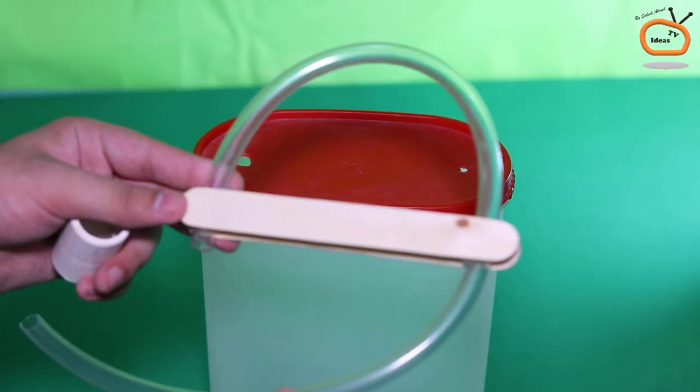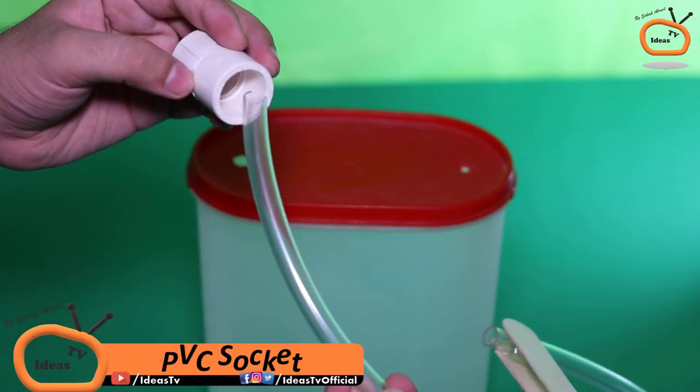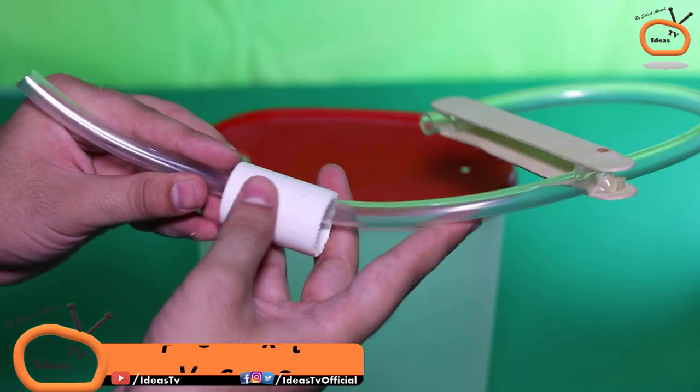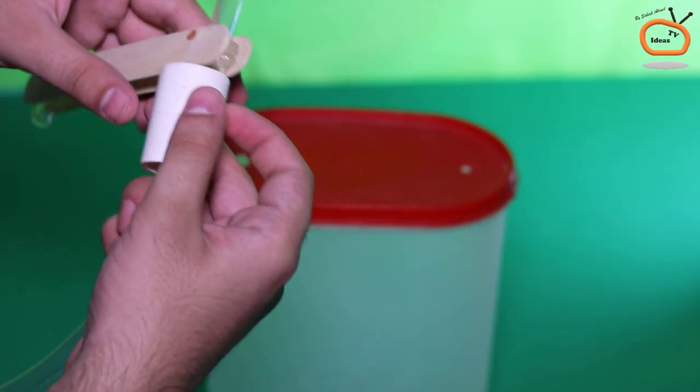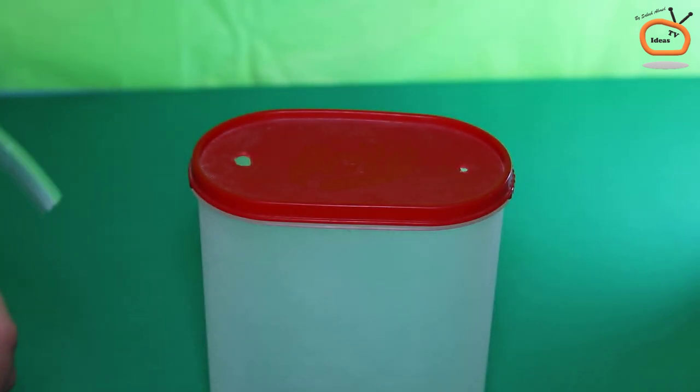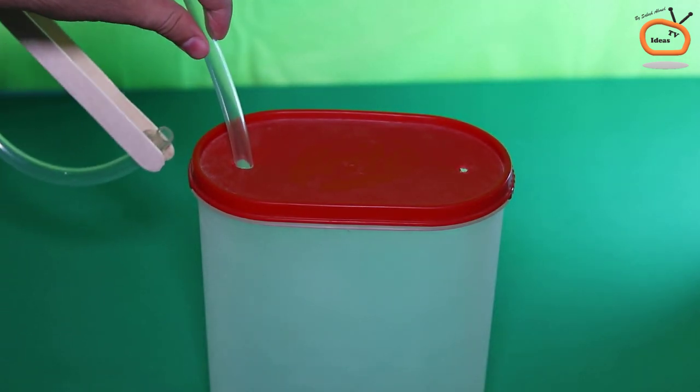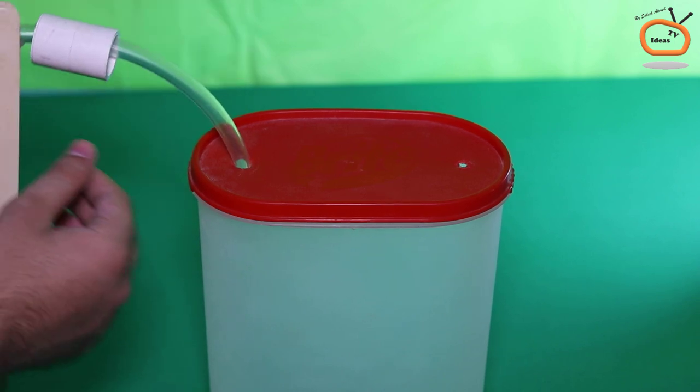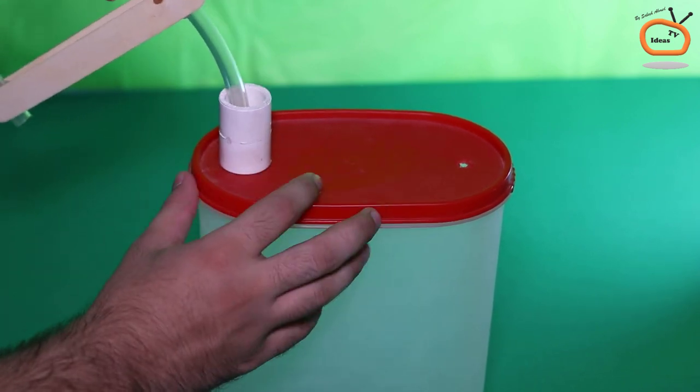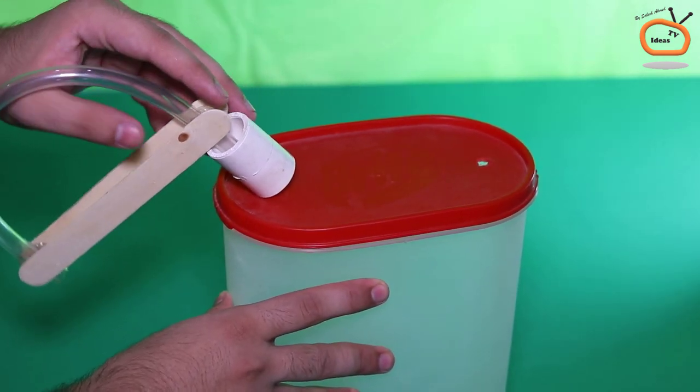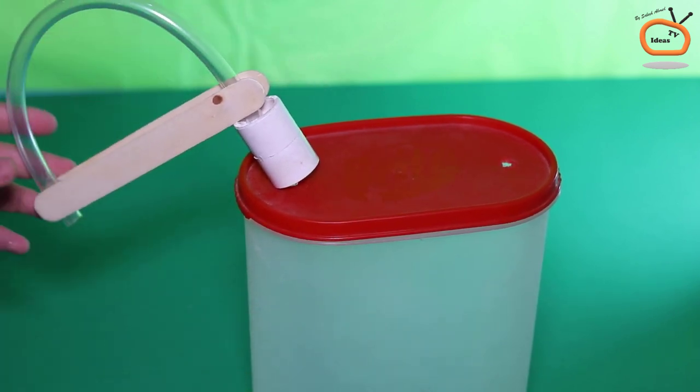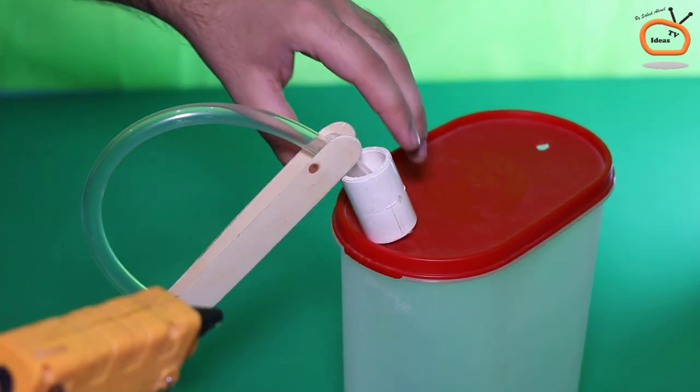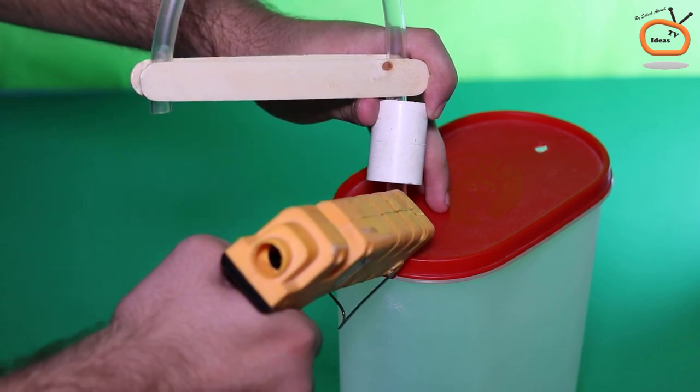Now, fit the previously prepared tap in it and use a PVC socket like this. Fix them all with the help of hot glue.